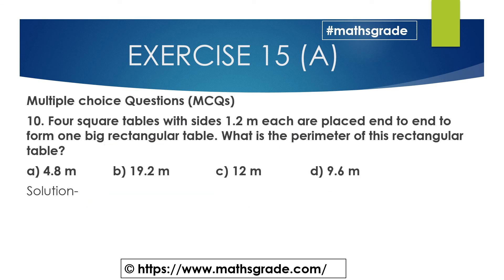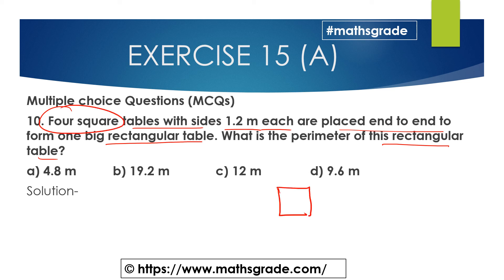Now we solve Question 10, a multiple choice question. Four square tables with side 1.2 meters each are placed end to end to form one big rectangular table. What is the perimeter of this rectangular table? Here are the four square tables placed end to end.